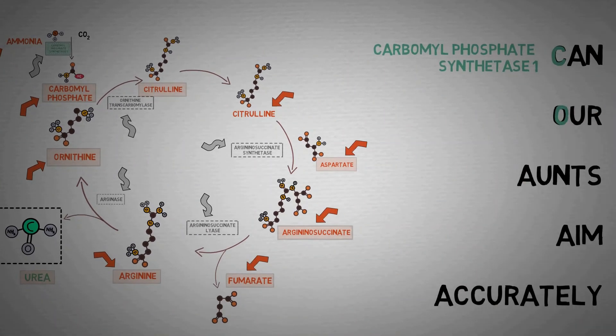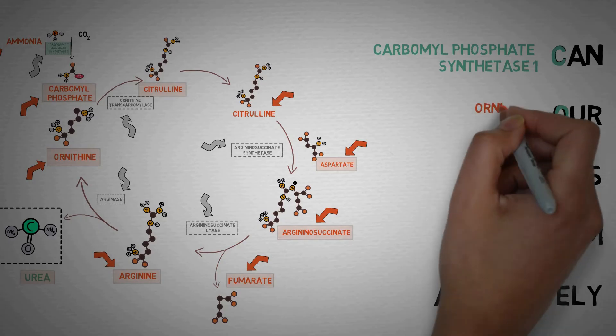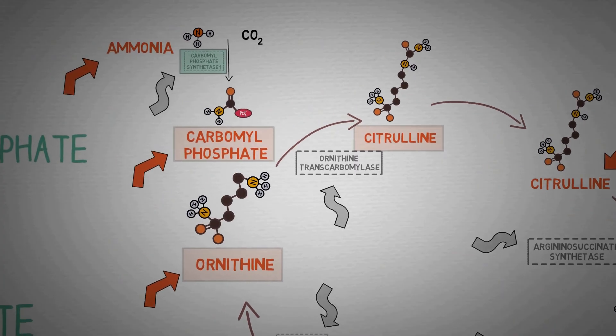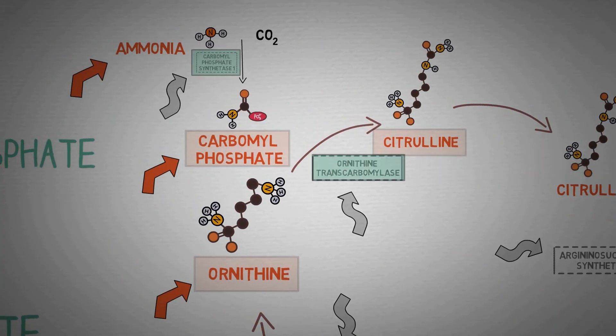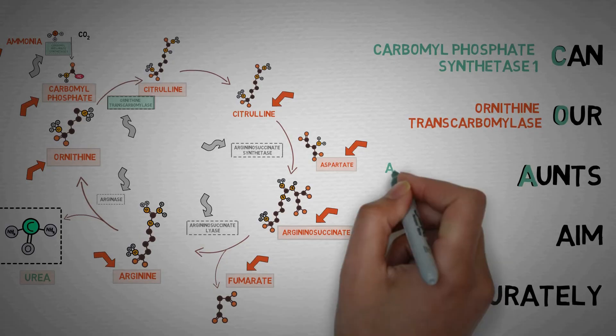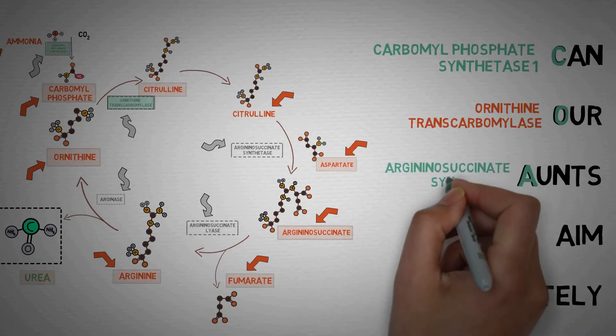The O in our stands for ornithine transcarbamylase. This is the enzyme right here that is involved in the combination of ornithine and carbamyl phosphate, leading to the formation of citrulline. The A in aunts stands for argininosuccinate synthetase.